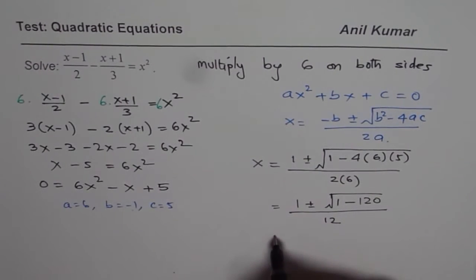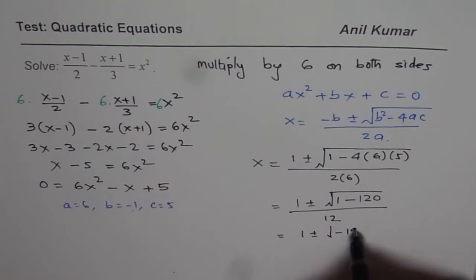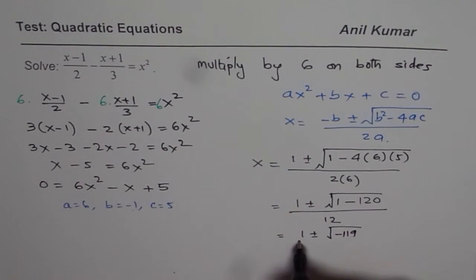Now clearly that is a negative number. So we have 1 ± √(-119) divided by 12.